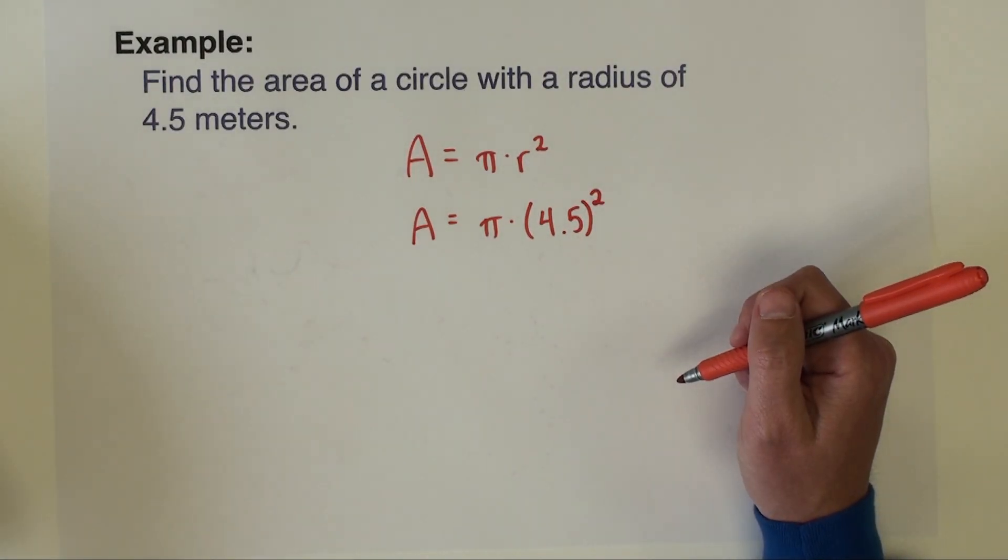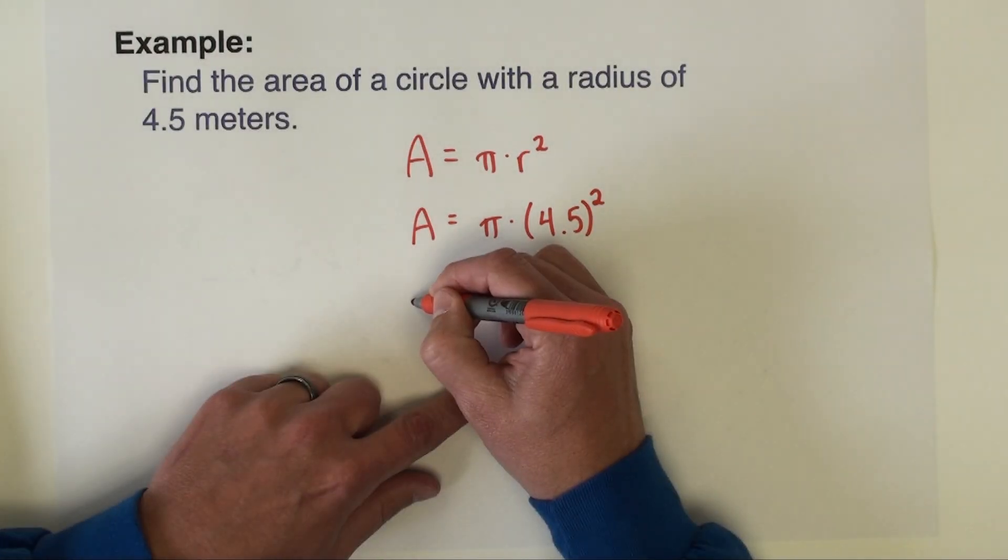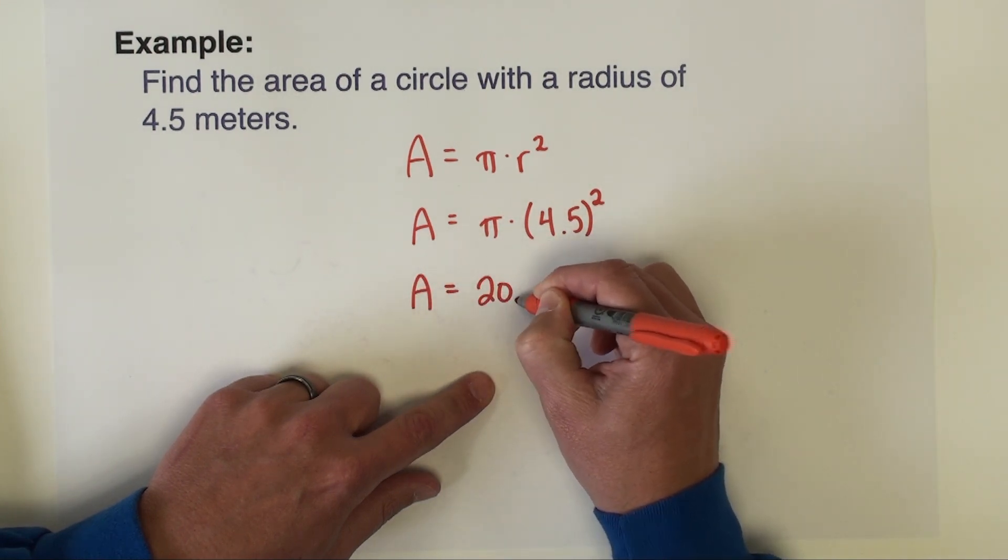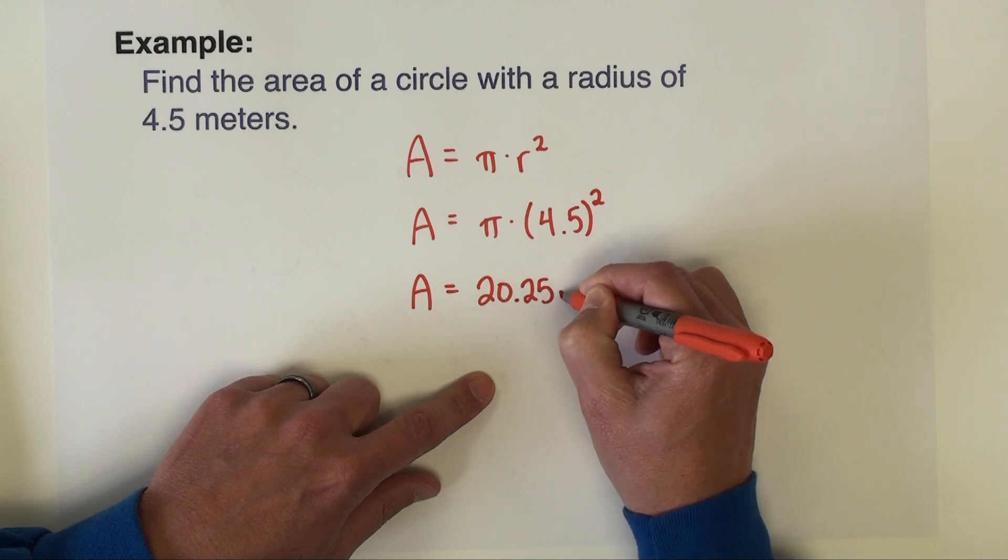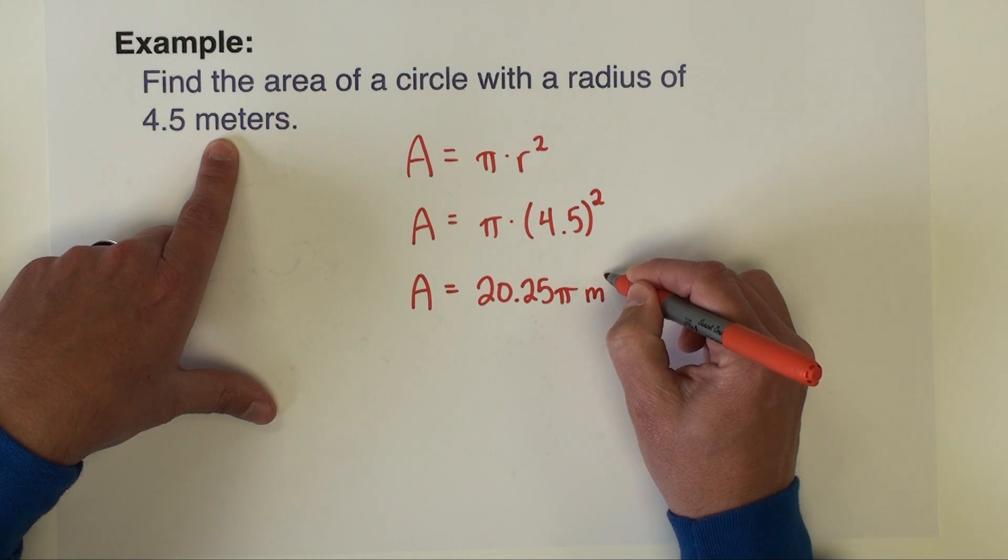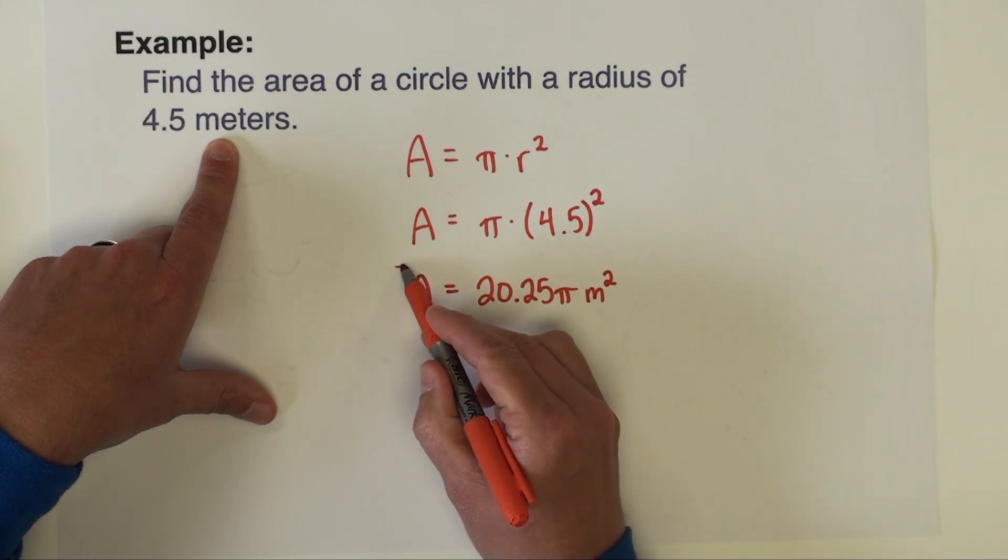Let's go ahead and do this how we began the last one. I'm going to give you an exact answer first. So 4.5 squared is 20.25, so we would have 20.25 pi. Units in this problem are meters, so our units because this is area are going to be meters squared.